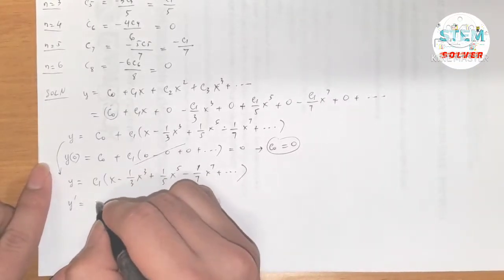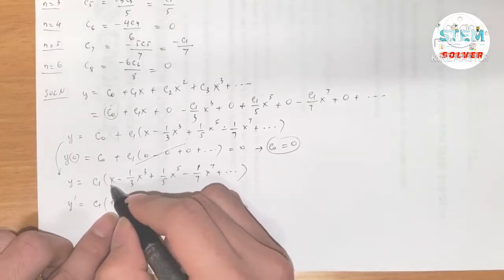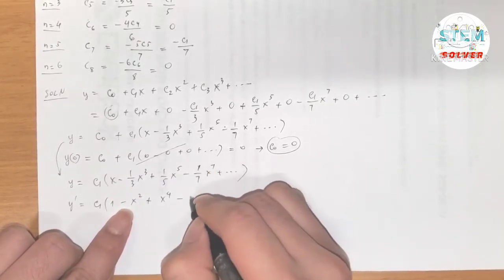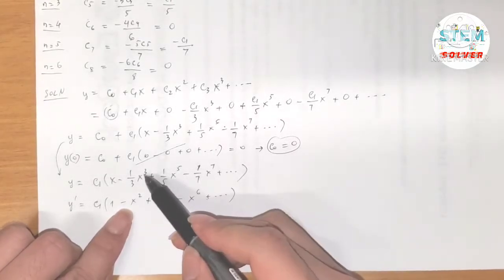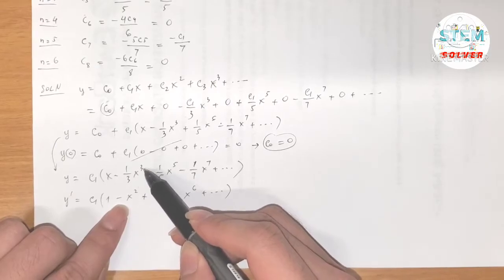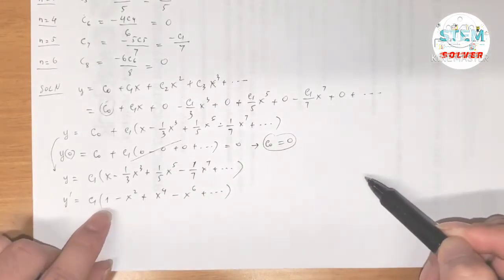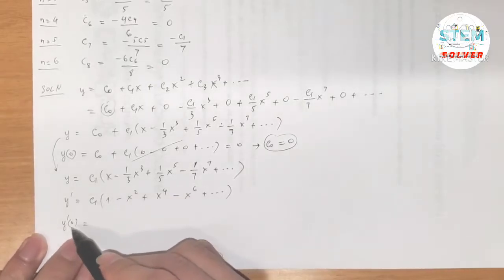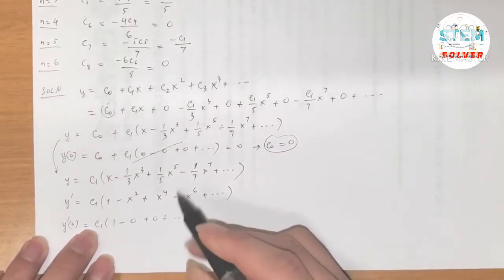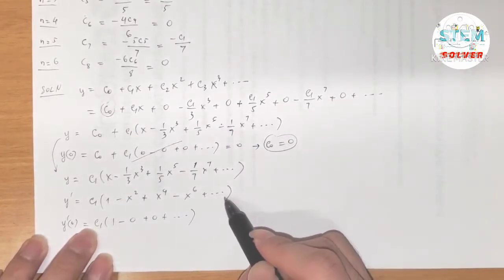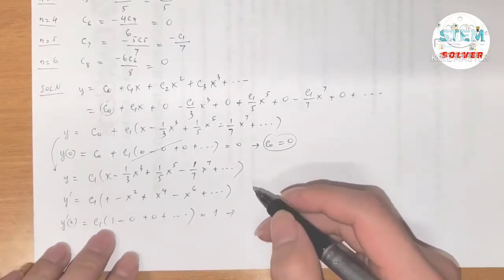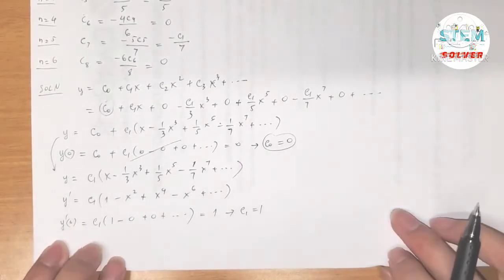Now apply y'(0) = 1. Taking the derivative: y' = c₁·(1 − x² + x⁴ − x⁶ + …). Plugging in x=0: y'(0) = c₁·1 = c₁. Since y'(0) = 1, we get c₁ = 1.